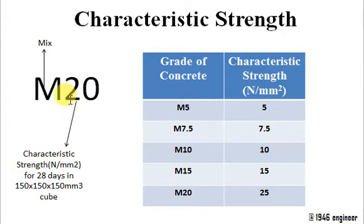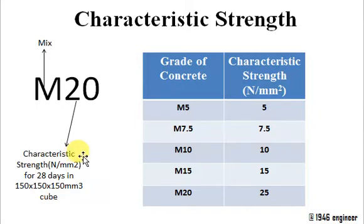20 is nothing but the characteristic strength of that particular grade of concrete. Characteristic strength is the compressive strength where 95% of results are expected to fall above this number.